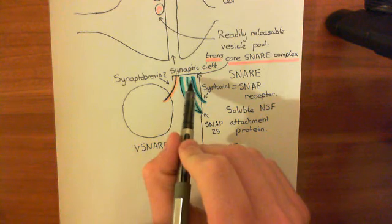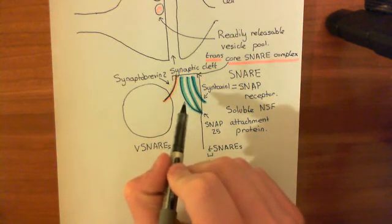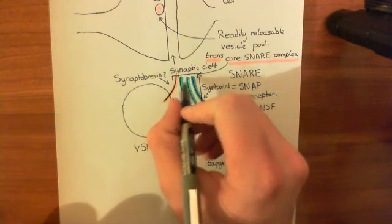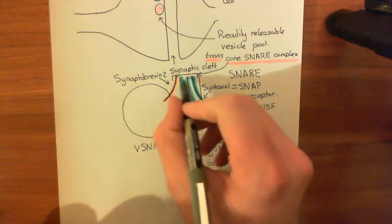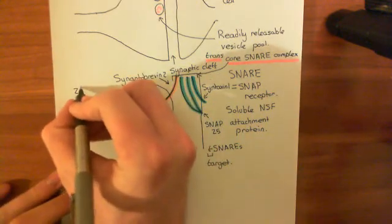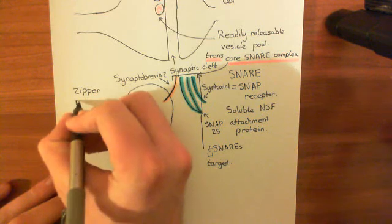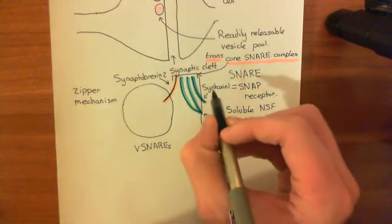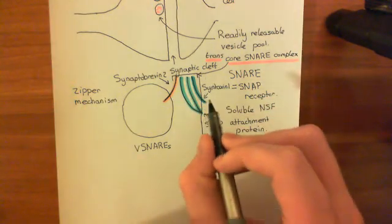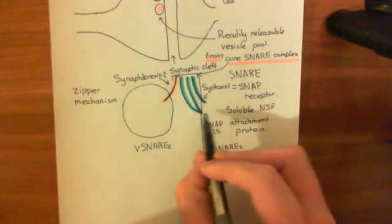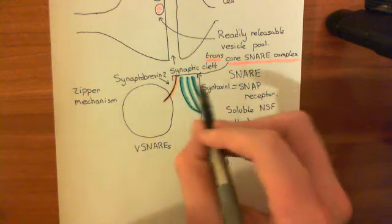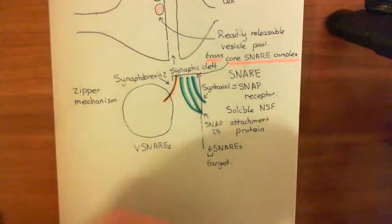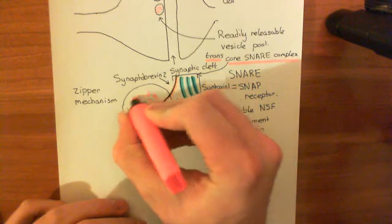What's going to happen is these four alpha helices are going to wrap up and intertwine together to form the trans-core SNARE complex. It's speculated that they begin wrapping up from the membrane-distal ends and then make their way down — this is known as the zipper mechanism or zipper hypothesis. The order of formation is that initially syntaxin-1 and SNAP25 intertwine with one another to form a pre-SNARE complex, and then synaptobrevin-2 comes and joins when the synaptic vesicle arrives, making the full core SNARE complex.